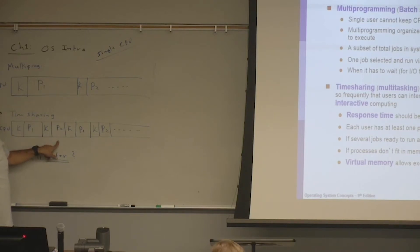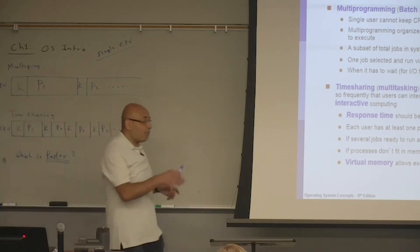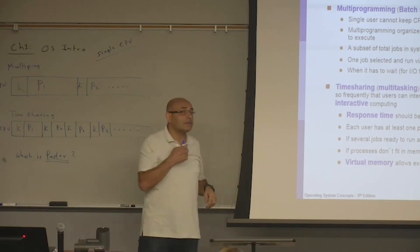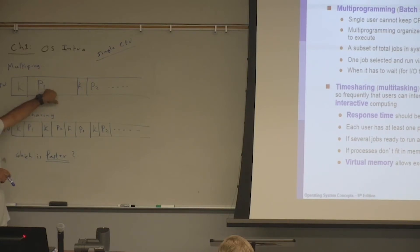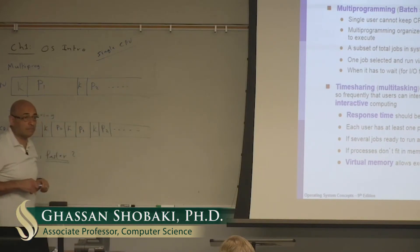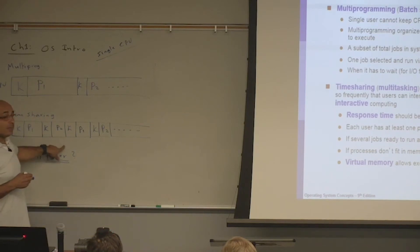From throughput point of view, multiprogramming is better. From user responsiveness point of view, time-sharing is better. The word 'faster' is not well defined here. Multiprogramming gives better throughput; time-sharing gives better user responsiveness. So what would the user experience be like on multiprogramming? With time-sharing we get an interactive experience. Multiprogramming is definitely less interactive, and if a process does not request I/O for a long time, the user will feel the system is slow.